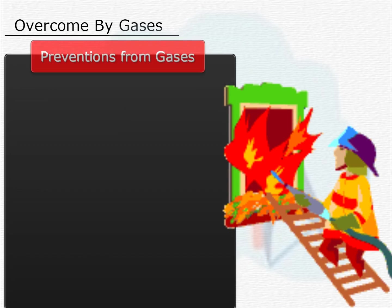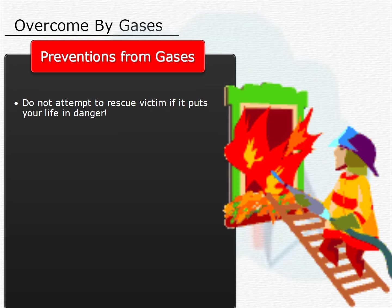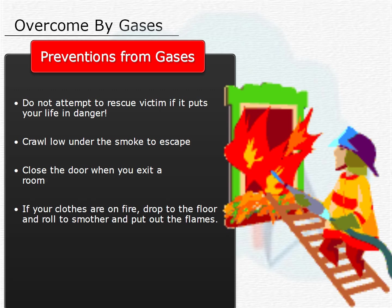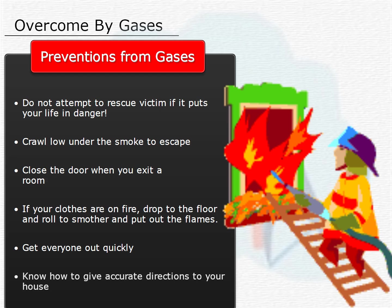Here are a few preventions to take when fire strikes. You should not attempt to rescue a victim if it puts your life in danger. You should know how to crawl low under smoke to escape — this should be practiced beforehand. Close the door when you exit a room and feel a closed door before you enter; a hot door or doorknob usually means the room is on fire. If your clothes are on fire, drop to the floor and roll to smother and put out the flames. Get everyone out quickly, then call for emergency assistance. Know how to give accurate directions to your house when you call.